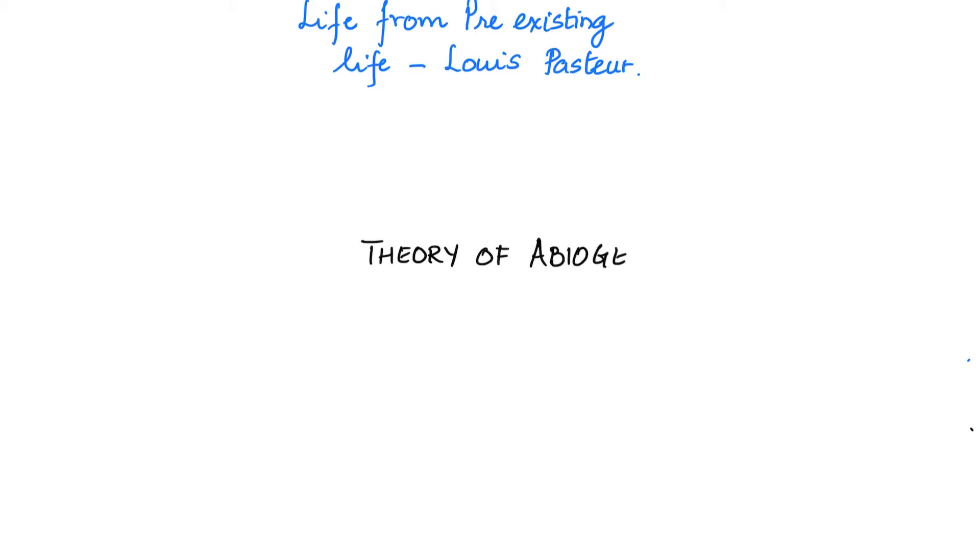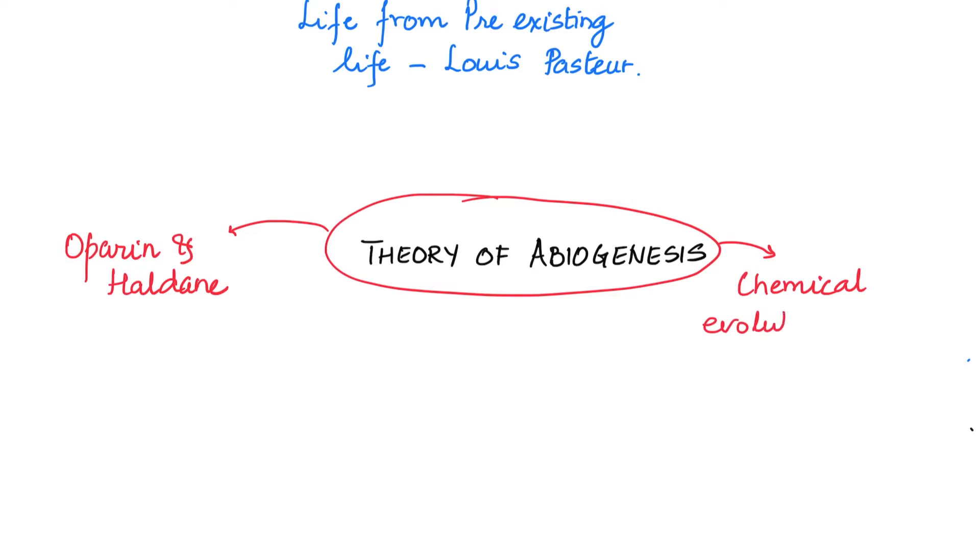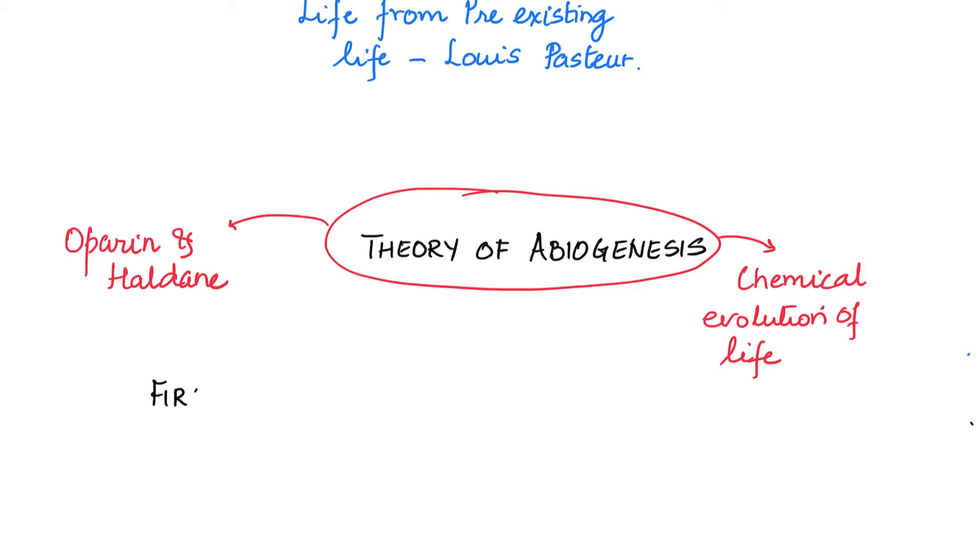Finally, it was a theory of abiogenesis proposed by Oparin and Haldane that was based on chemical evolution of life. This theory talked about the origin of the first life forms from non-living organic molecules like RNA and proteins. These gave rise to the first cells which are also called protobions.